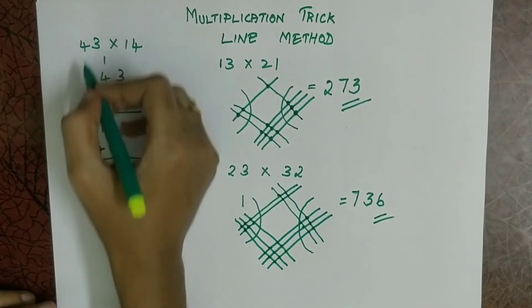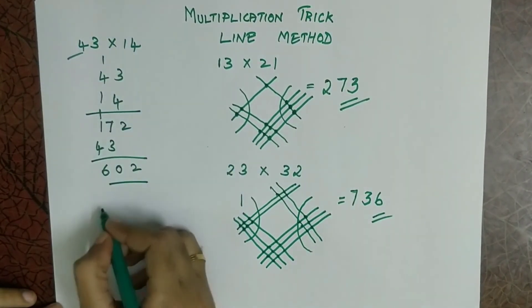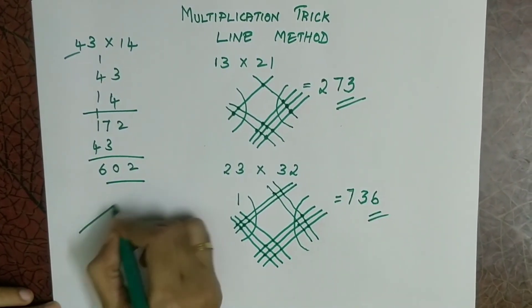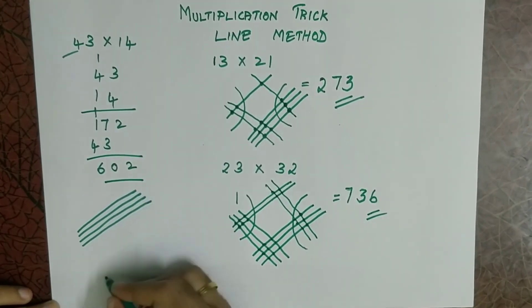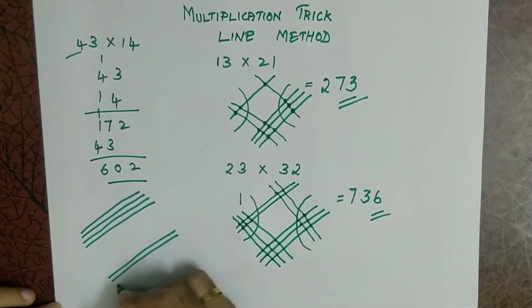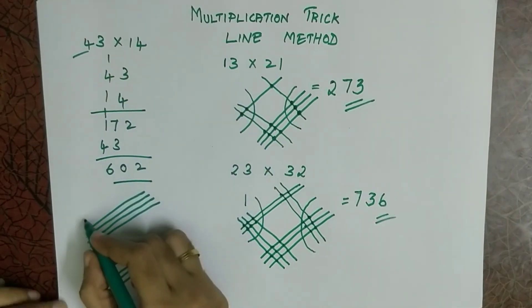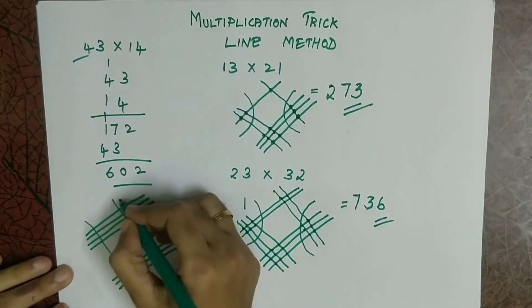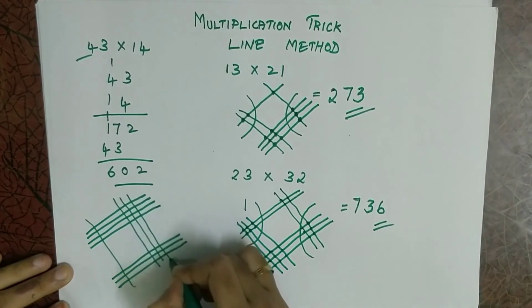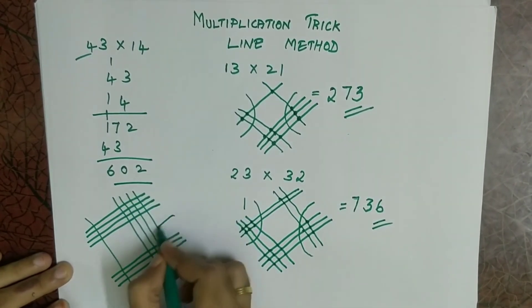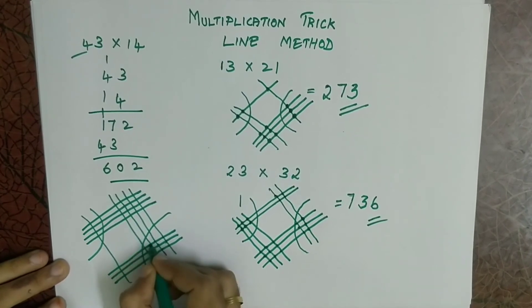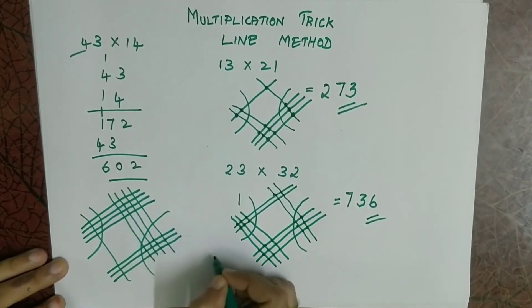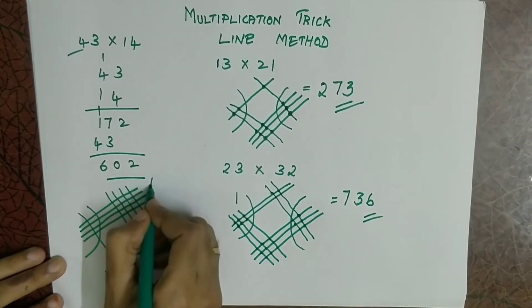Now let's solve this sum also. So 43 into 14. So 1, 2, 3, 4 and then 3 lines, and then 14. So 1, 2, 3, 4... 5, 6, 7, 8, 9, 10, 11, 12. So 2 here and 1 remainder.